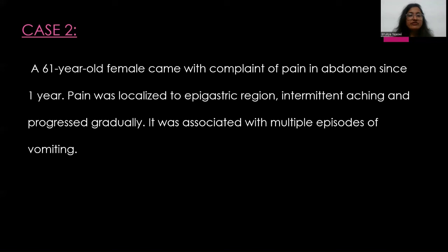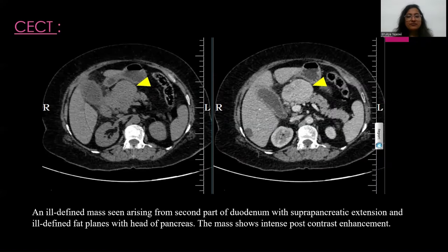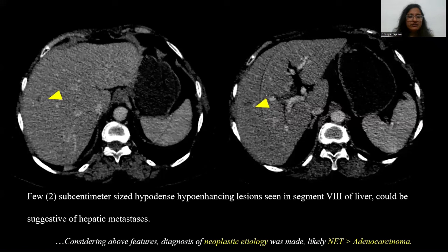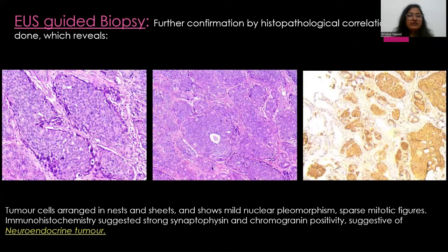My second case is a 61-year-old female who presented with pain in the abdomen for one year, localized to the epigastric region, intermittent and aching in nature, progressing gradually, and associated with multiple episodes of vomiting. CECT revealed a well-defined mass arising from the second part of the duodenum with suprapancreatic extension and ill-defined fat planes with the head of the pancreas, showing intense post-contrast enhancement. Two sub-centimetric hypodense hypo-enhancing lesions in segment 8 of the liver were suspected to be hepatic metastasis. A diagnosis of neoplastic etiology — likely NET more than adenocarcinoma — was made, and US-guided biopsy confirmed the diagnosis of NET.